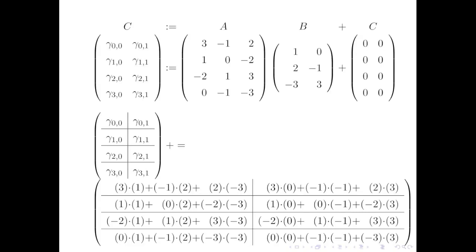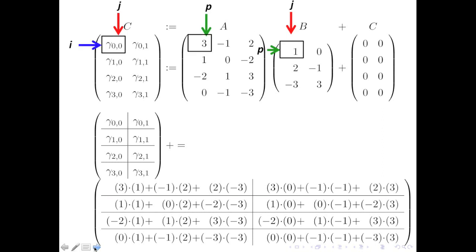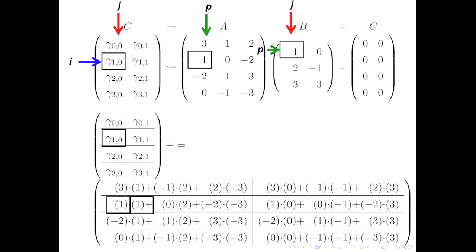This is a very full screen — let's try to make sense of it. We have a concrete example of a 4×3 matrix A multiplying a 3×2 matrix B updating a 4×2 matrix C. We've written out all the computations that need to be performed. The loop index P marches across the columns of A and down the rows of B. The first computation performs the update right down here — the 3 times 1 — then the second one does the next one, and so on.